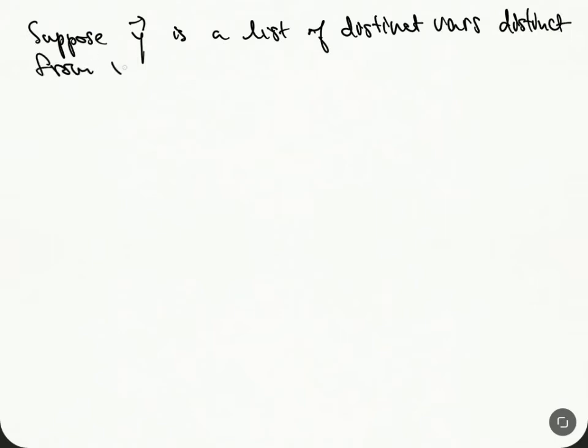So I'm going to define three functors in this category. So first we need to suppose Y is a list of distinct variables, distinct from X. So it's totally disjoint. And then here's what I'm going to do. I'm going to define the three things. So there's this stupid inclusion for a formula in context with X into a formula in context for X, Y.